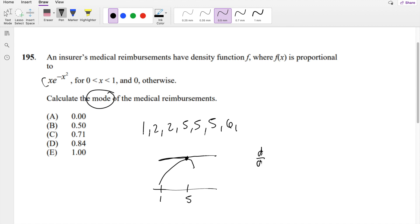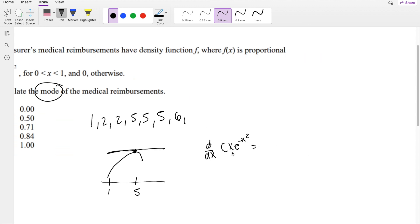Take the derivative in terms of x, Cxe^(-x²). When you take the derivative, this is actually a chain rule. So this is equal to, taking the chain rule of the first one will be Ce^(-x²)